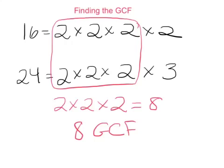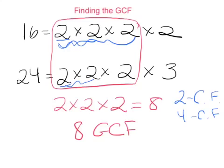If we're thinking about common factors of 16 and 24, we see that there's a 2 in both of them, so 2 is a common factor. There's 2 times 2 in both of them, so 4 is a common factor of both of them. And then there's 2 times 2 times 2, which is what we just found as the GCF, so 8 is also a common factor.